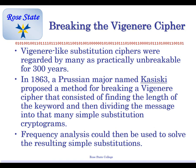Substitution ciphers like this were considered unbreakable for nearly 300 years. Compared to Caesar where we just shift letters by one, now we're shifting by anywhere from 1 to 26. In 1863, a Prussian Major named Kasiski — important to know that name for test questions — proposed a method of breaking them by finding the length of the keyword and then dividing the message into simple substitution ciphers.